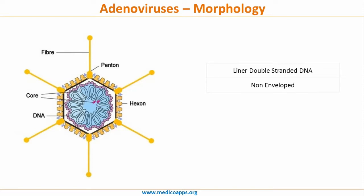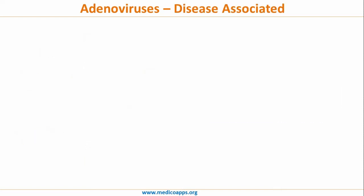The morphology: as already stated, it is a linear double-stranded DNA virus. It is non-enveloped and its form is that of a space vehicle or hexagonal in shape. It also has the potential to be used as a vehicle for gene therapy.